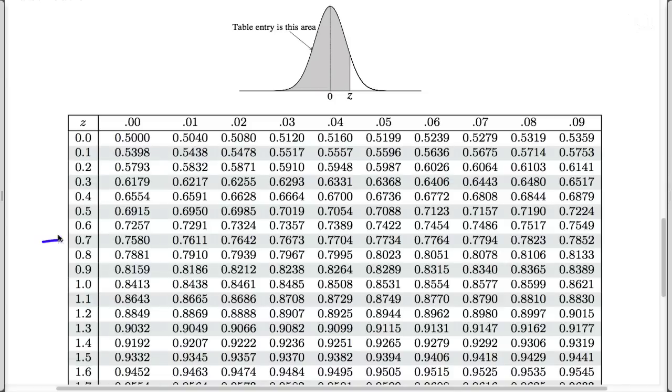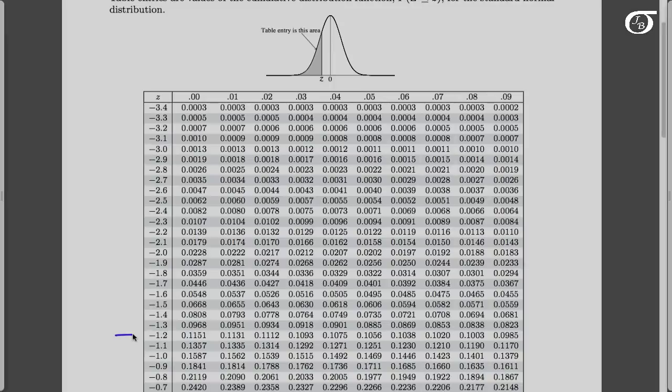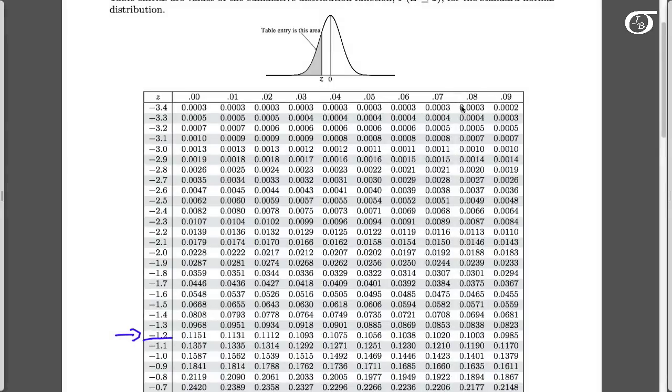If I look up 0.72, I find a value of 0.7642. And if I go to the other side to find the negative values, here's minus 1.2, and here's 0.08. So where do they intersect? Down here at 0.1003. So I'm going to go back now and finish off this problem.